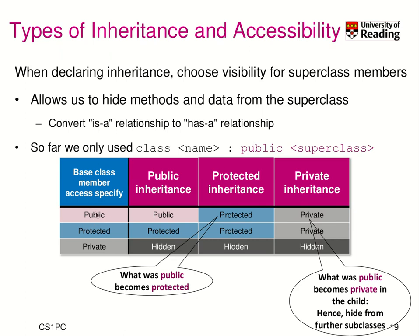What does public mean? If the base class member was public, public inheritance leaves it public afterwards. If it was protected, public inheritance leaves it protected. If it was private, it doesn't stay private — it becomes hidden. Hidden means in your child class you cannot access this data member whatsoever. It's really hidden, and that's what the word private means — it's hidden for anyone that tries to use it.